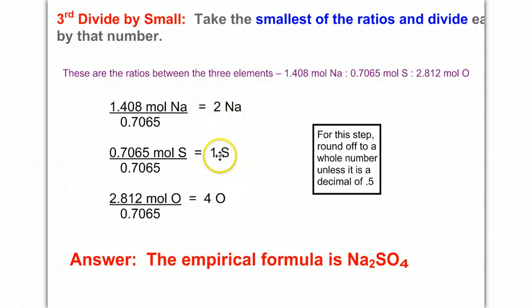So when I divide, I get two sodiums, one sulfur, and four oxygens. You should always round off to have a whole number unless you see where it should be a 0.5, but we don't have that in this scenario. We have two sodiums, one sulfur, and four oxygens, which make up my empirical formula: Na2SO4.